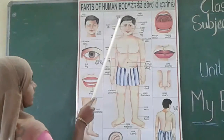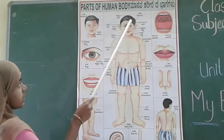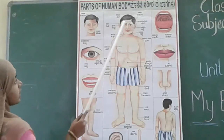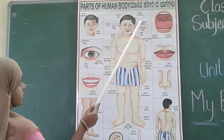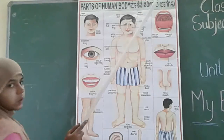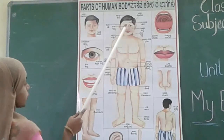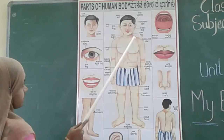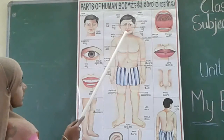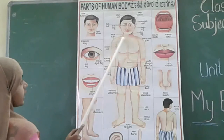This is our head. On our head we have hairs. This is the forehead. This is the ear — we have two ears. This is the eye — we also have two eyes. This is called the cheek. And this is called the chin. This is our neck area.